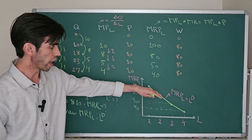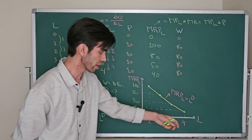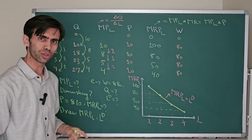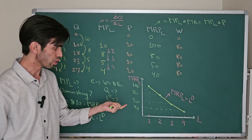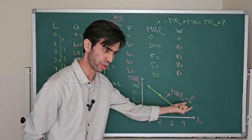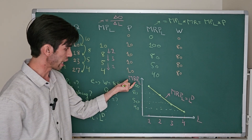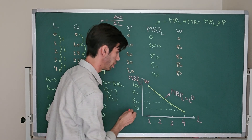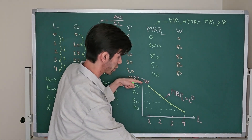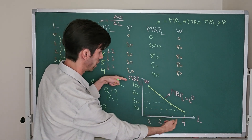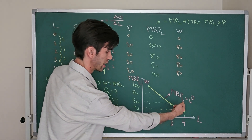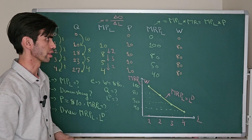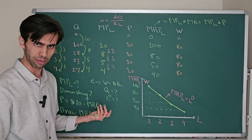If you don't know why the marginal revenue product of labor equals the labor demand curve, we covered this in a previous video — I'll link it here. The MRPL can be set equal to the nominal wage rate, so the relationship between labor and wage rate is the labor demand curve, which is the same as the relationship between labor and MRPL.